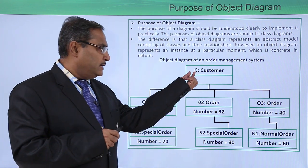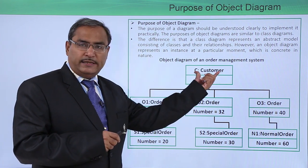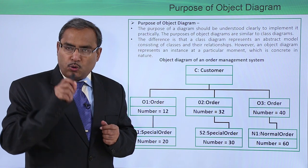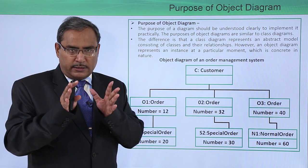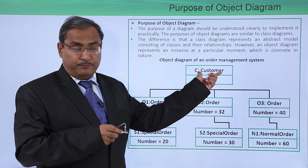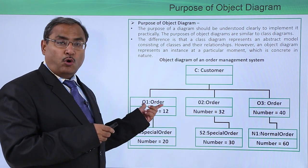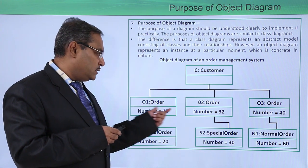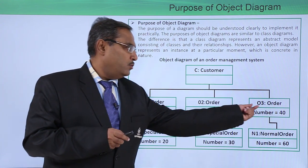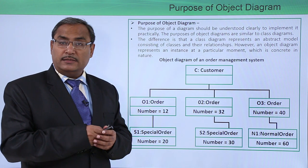What is the object which we have defined under this customer class? That is c. There is a way to write this - object name colon class name. O1 is one of the objects under the class Order, O2 is another object, and O3 is another object under the class Order.